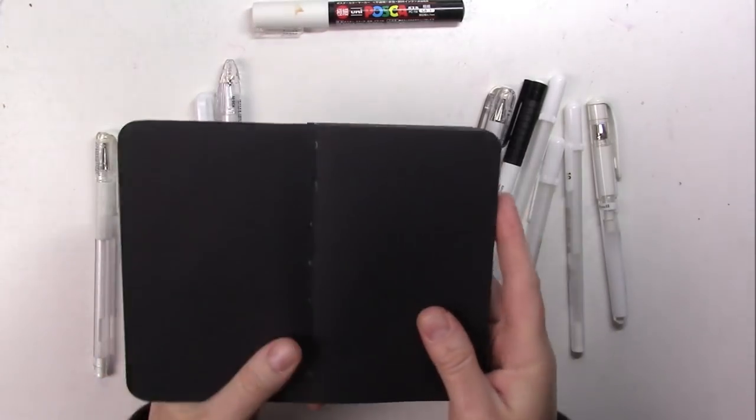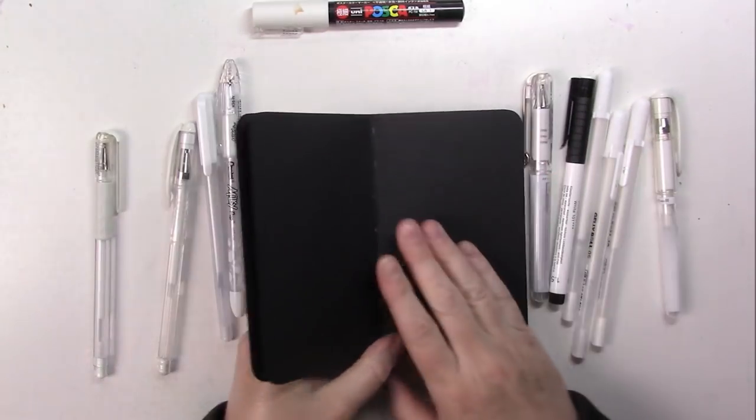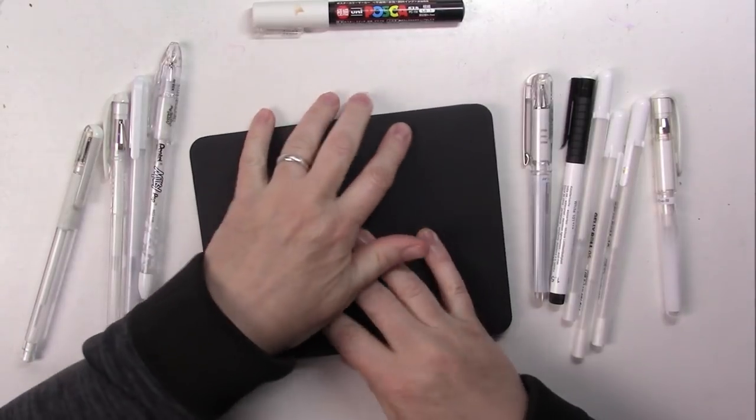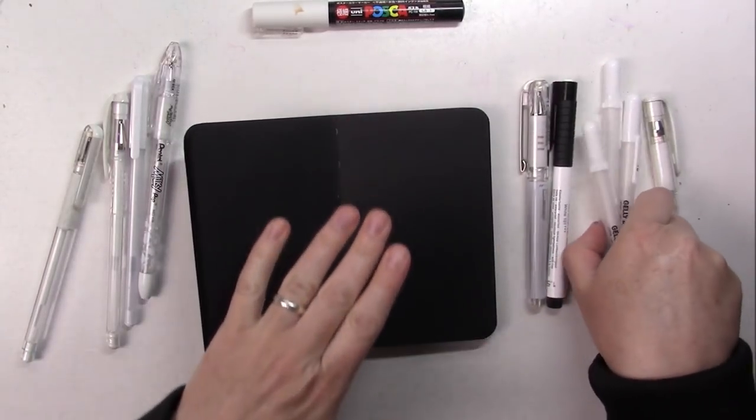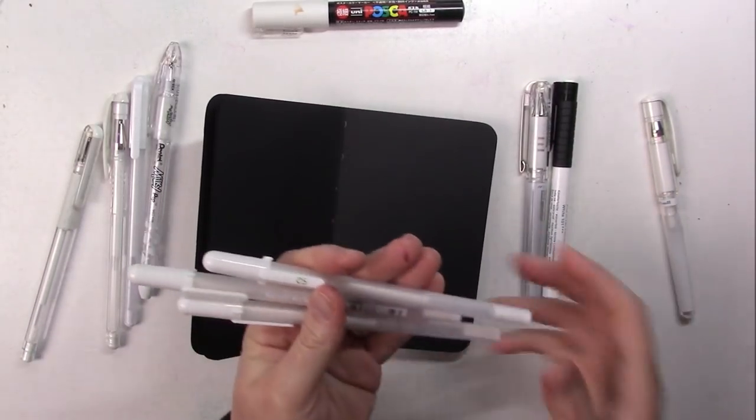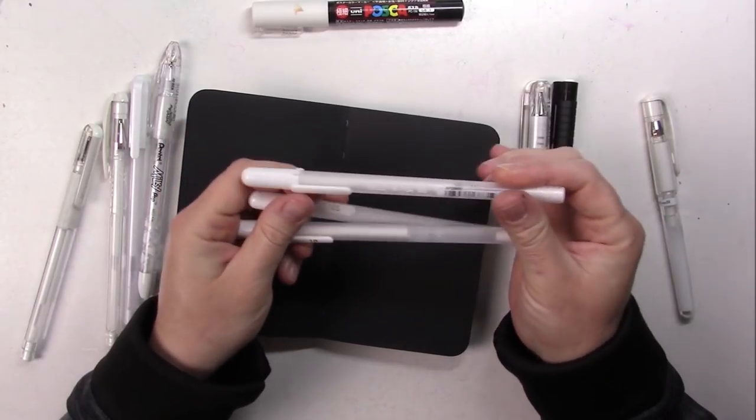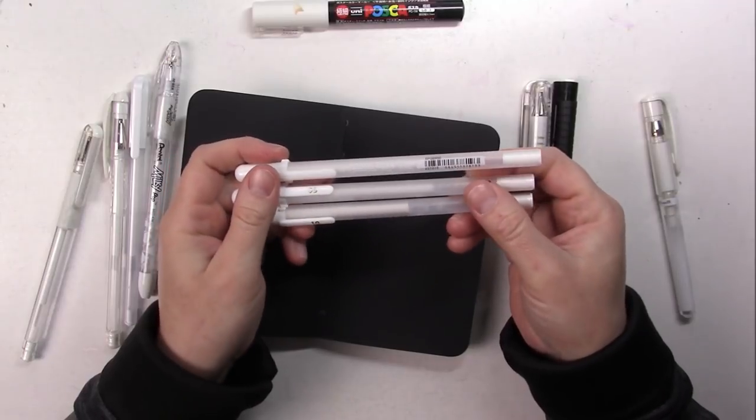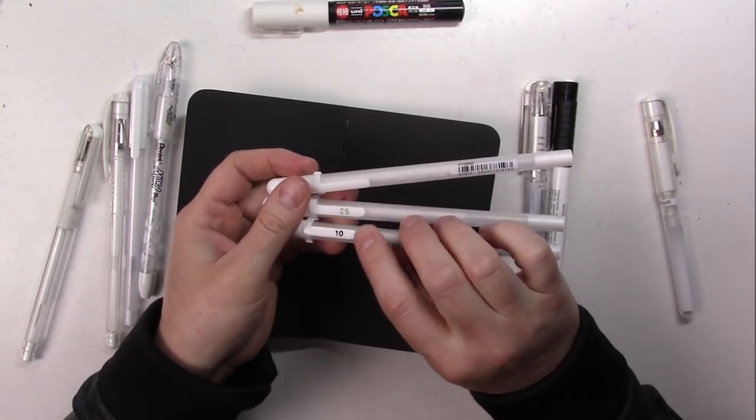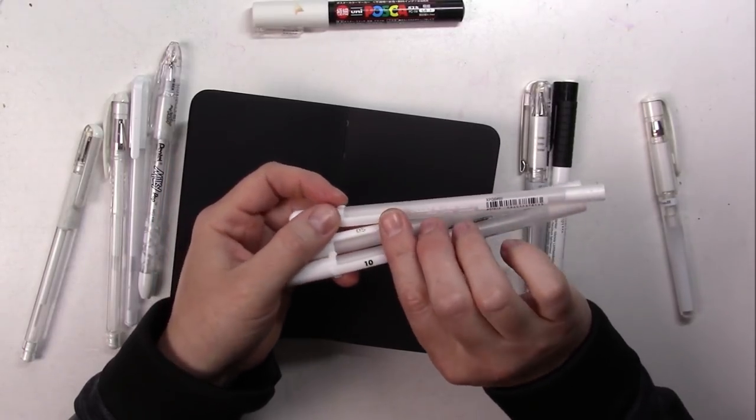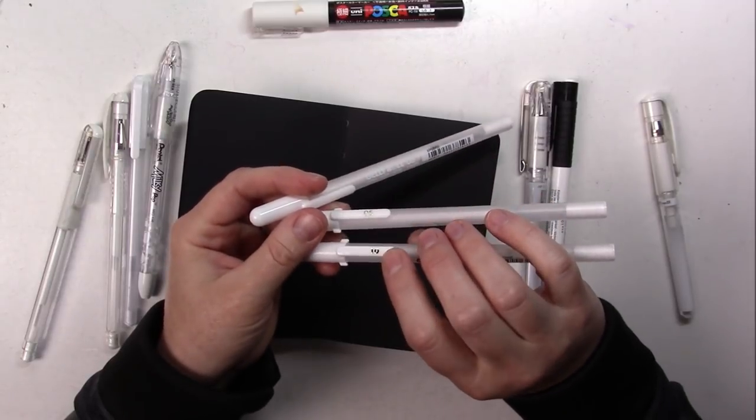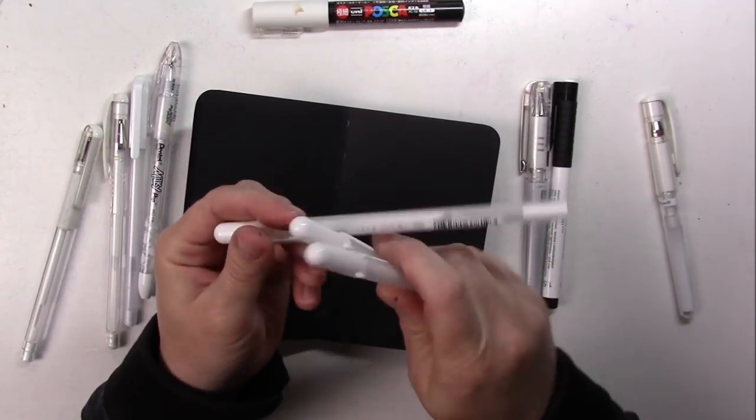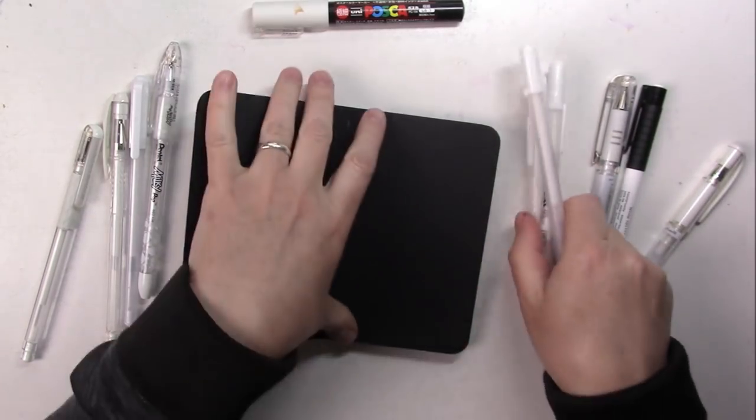For this test we're going to use the Stillman and Birn Nova series, this is a black sketchbook which is pretty cool. We're gonna get rid of all the Gelly Rolls first. I've got three different Gelly Rolls here. I believe the 0.08 is the original one, and then came the 0.05 and the 0.10, the 0.10 having a bigger, broader tip.